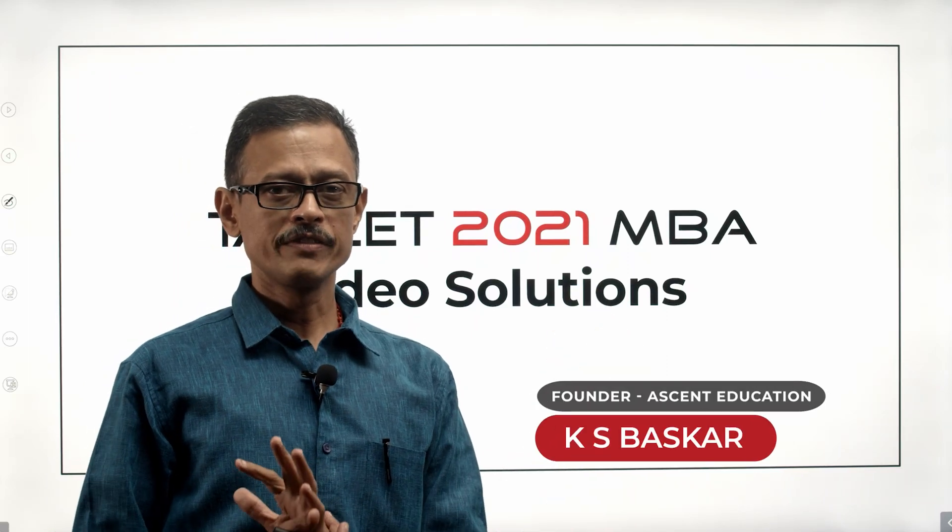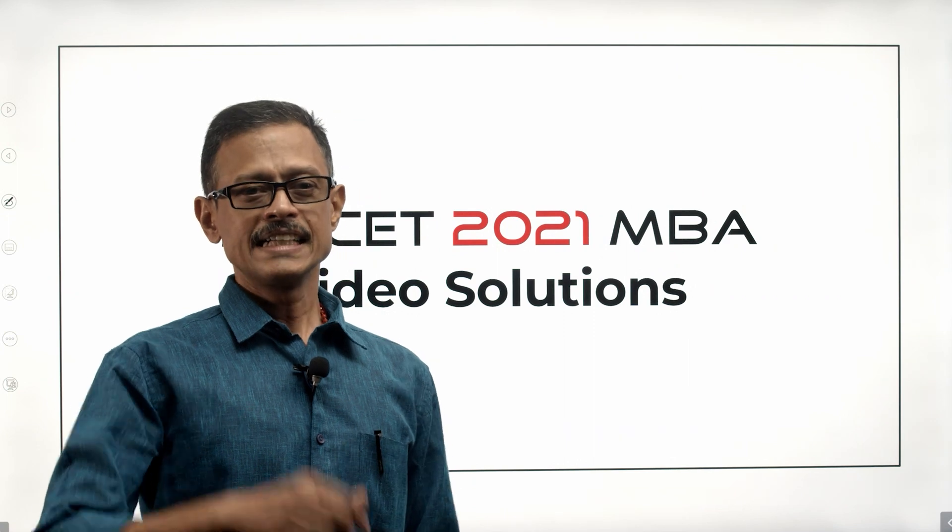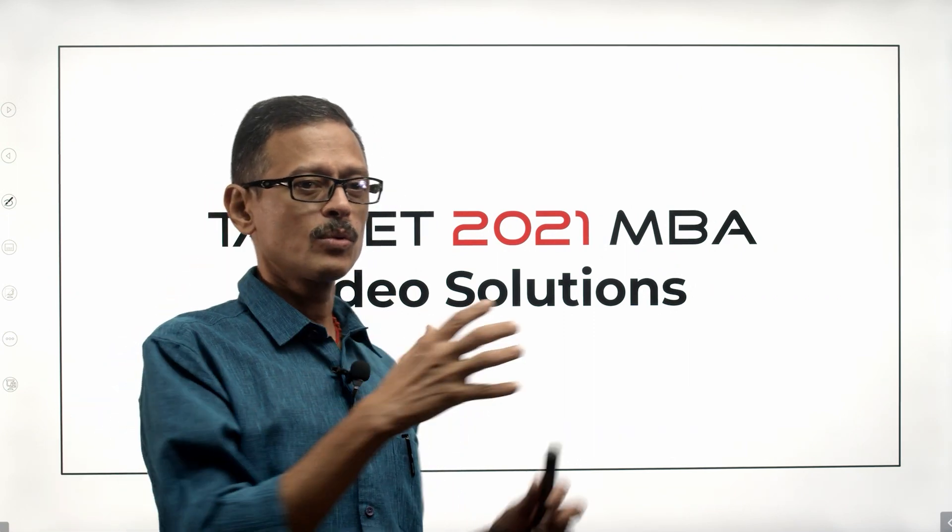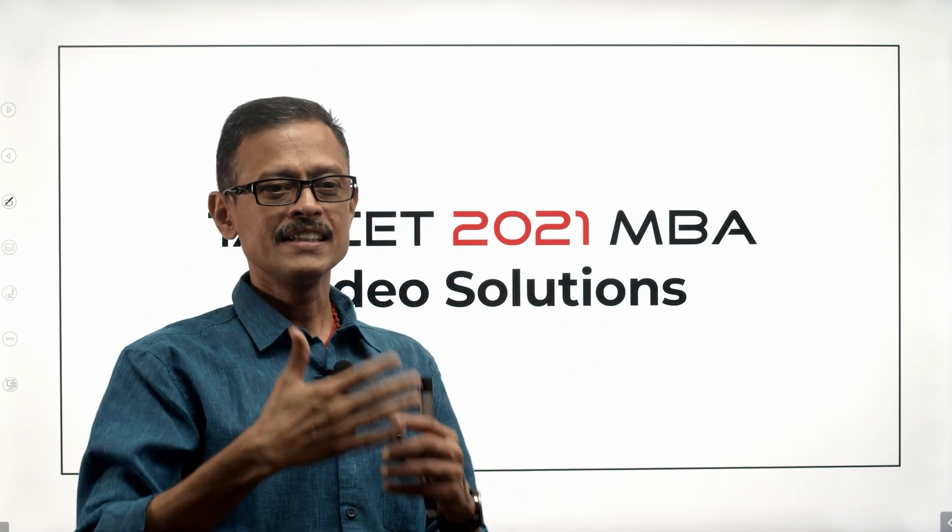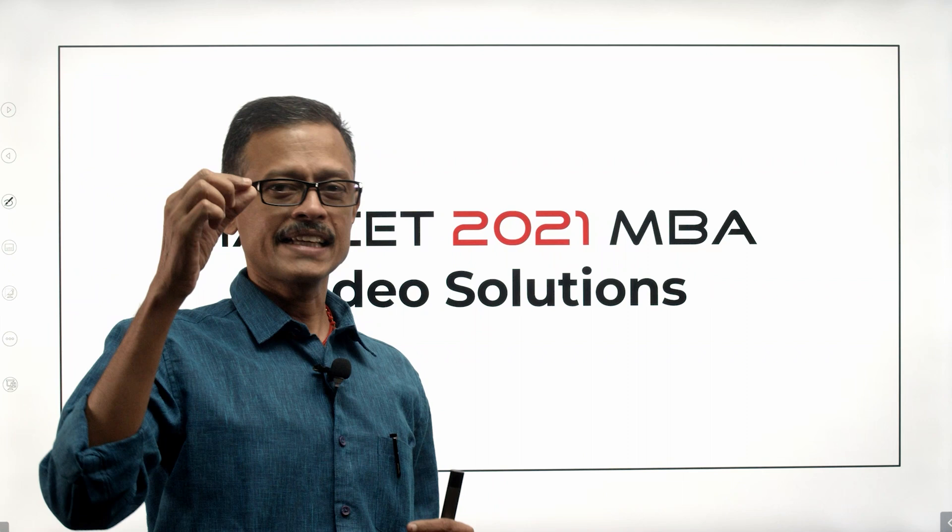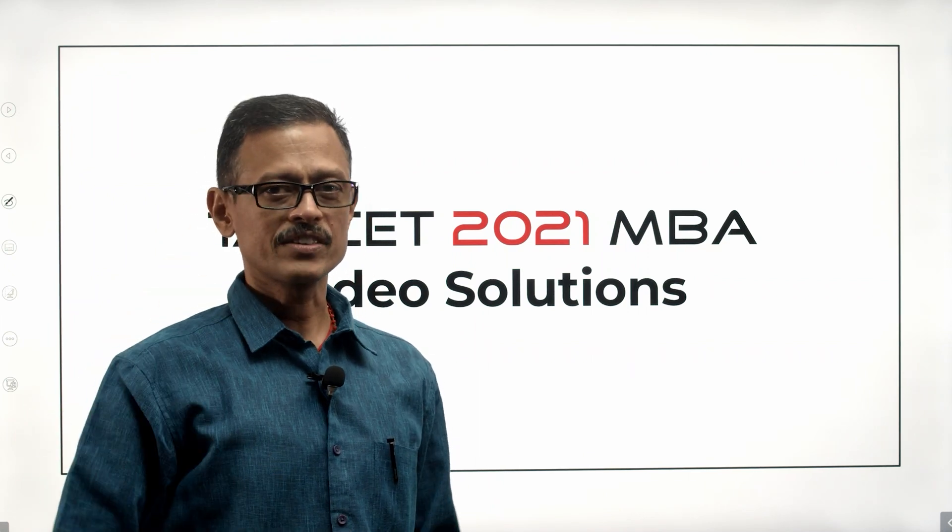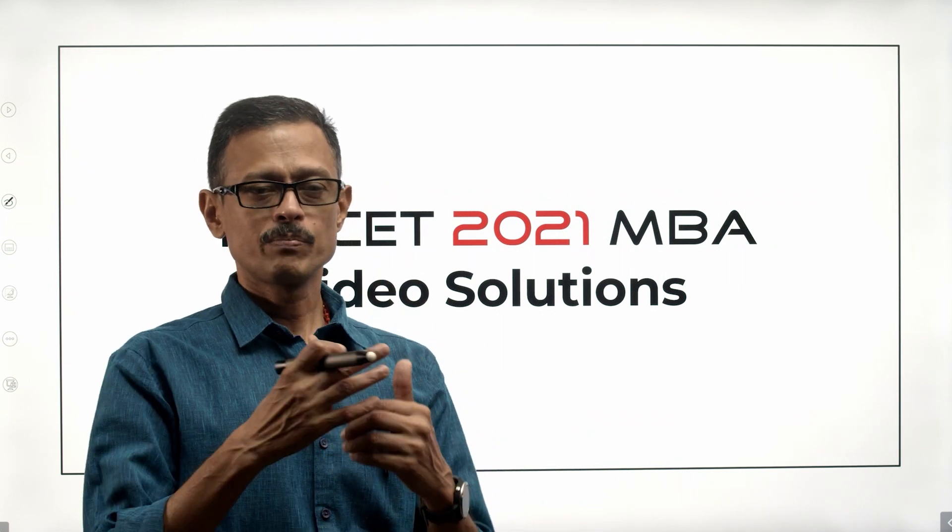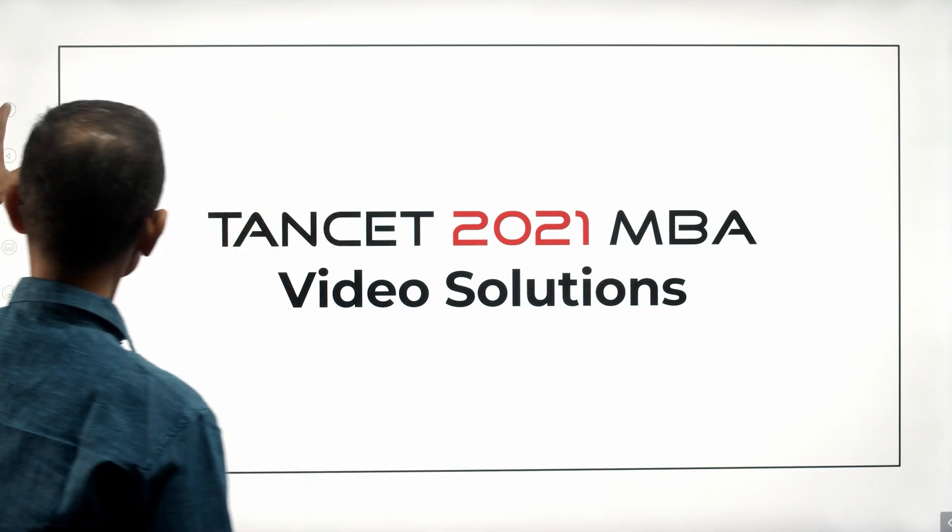TANCET 2021 MBA question paper, video solution for data sufficiency question number 73, an interesting question from number properties. I just want you to be careful about how you answer these questions. We will have a quick takeaway at the end about a mistake that could have been made in a question of this kind that can be avoided.